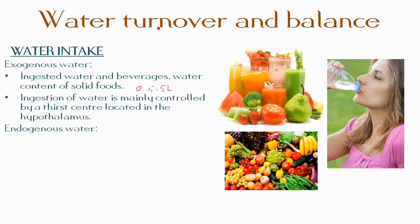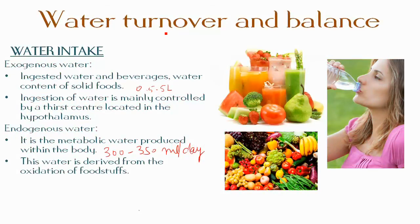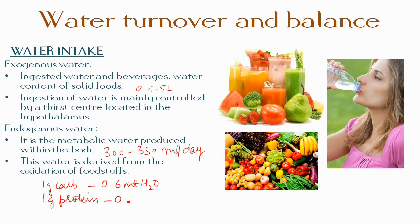The metabolic water produced within the body is the endogenous water, which amounts to about 300 to 350 ml per day. This water is derived from the oxidation of foodstuffs. It is estimated that one gram of carbohydrate yields 0.6 ml of water, one gram of protein yields 0.4 ml of water, and one gram of fat yields 1.1 ml of water. On average, about 125 ml of water is generated per 1000 calories consumed.